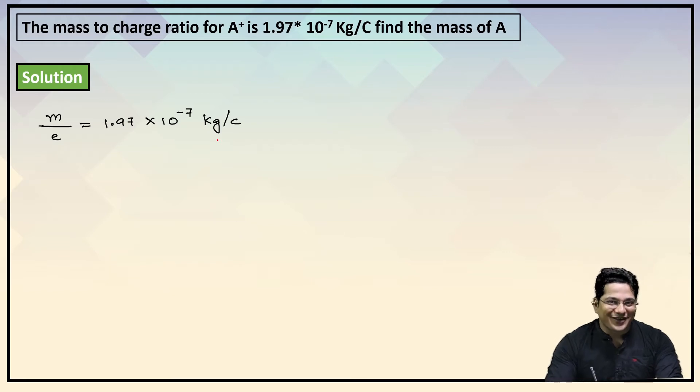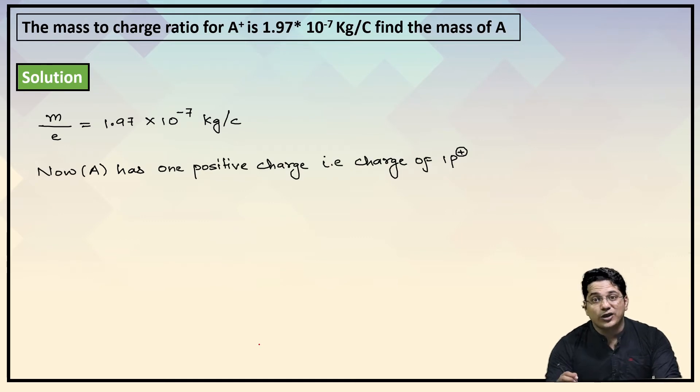Let's look at the solution. What is given? The only thing given is mass-to-charge ratio: 1.97 × 10⁻⁷ kg per coulomb. Now what we know is that the current species we are discussing is A with one positive charge, meaning charge of one proton.